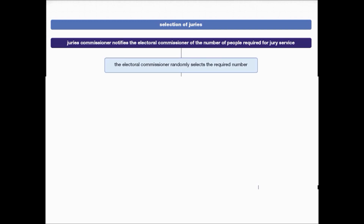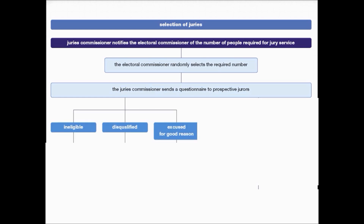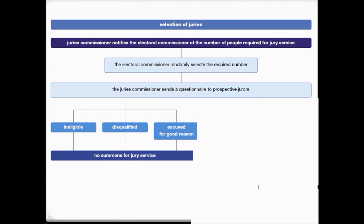In terms of the selection of juries, firstly the Juries Commissioner, who is in charge of juries in Victoria, notifies the Electoral Commissioner of the number of people required for jury service. The Electoral Commissioner randomly selects the required number of jurors from the electoral roll, and then the Juries Commissioner sends a questionnaire to all those prospective jurors. People are required to answer the questionnaire within a certain time period, after which the Juries Commissioner determines whether jurors are ineligible, disqualified, or excused for good reason.